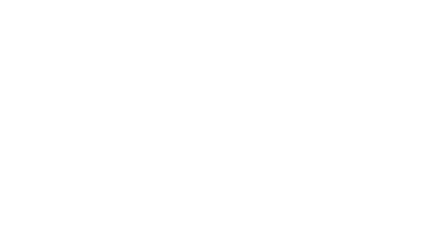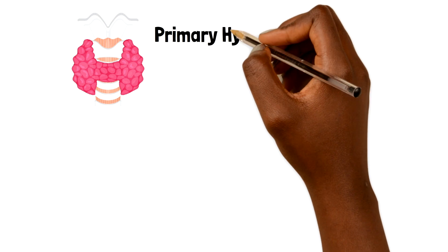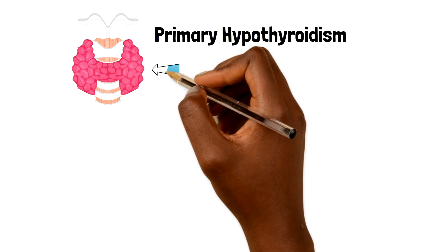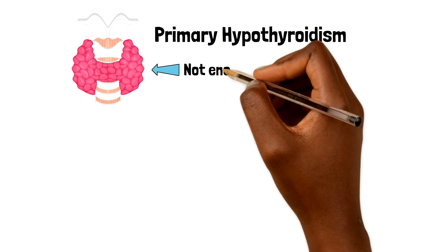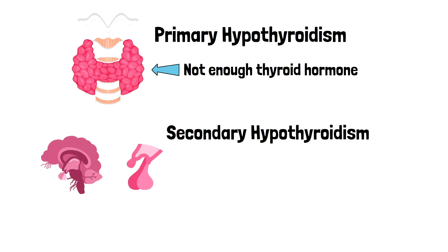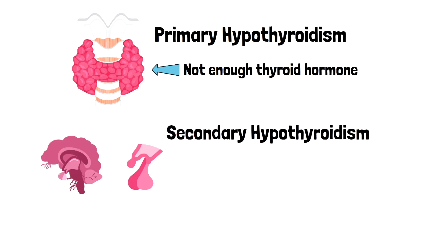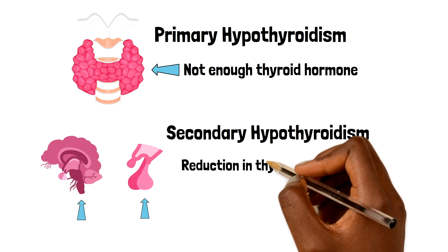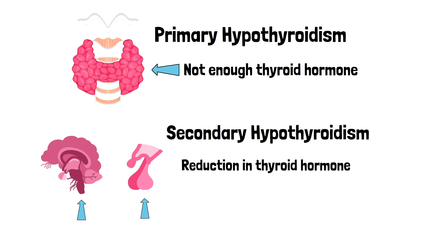The majority of cases of hypothyroidism are caused by primary hypothyroidism, where the problem is that the thyroid gland is not producing enough thyroid hormone. Whereas in secondary hypothyroidism, the problem is a dysfunction of the pituitary or hypothalamus causing a reduction in thyroid hormone.